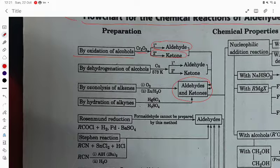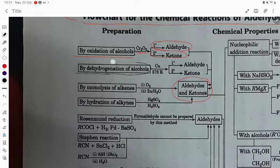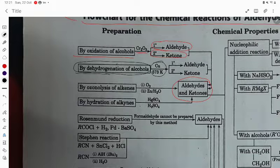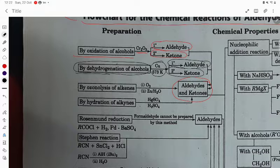By dehydrogenation of alcohol using copper powder at 573 Kelvin, primary alcohol will give aldehyde and secondary alcohol will give ketone.